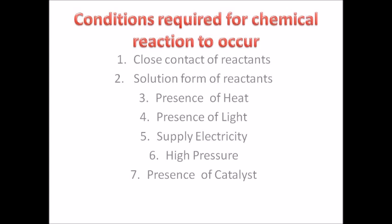The sixth condition is pressure. Pressure is required for certain reactions to take place. For example, nitrogen and hydrogen react together to form ammonia only when pressure above 200 atmospheres is applied. The seventh condition is a catalyst. Some reactions need a catalyst. Catalysts are substances which increase or decrease the rate of the reaction.